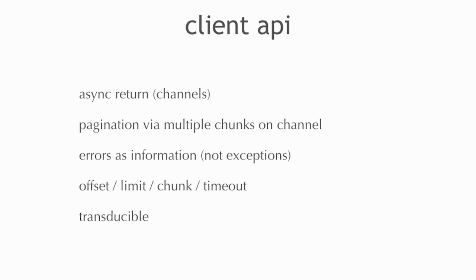Single result channels are called promise channels — they're just going to give you one result and then close. Errors are going to come back as information, as maps. The APIs where they can have pagination have offset, limit, chunk, and timeout, and they do what you think.